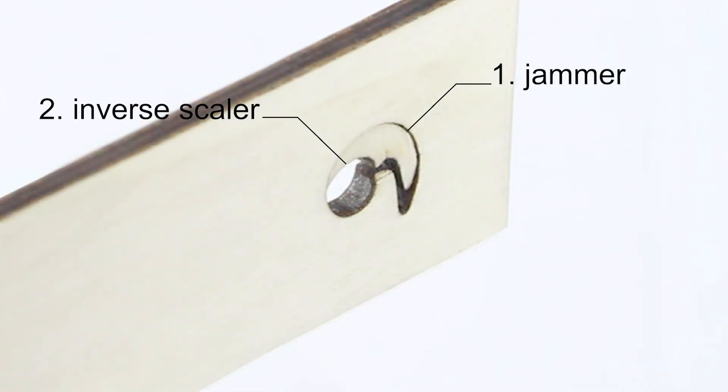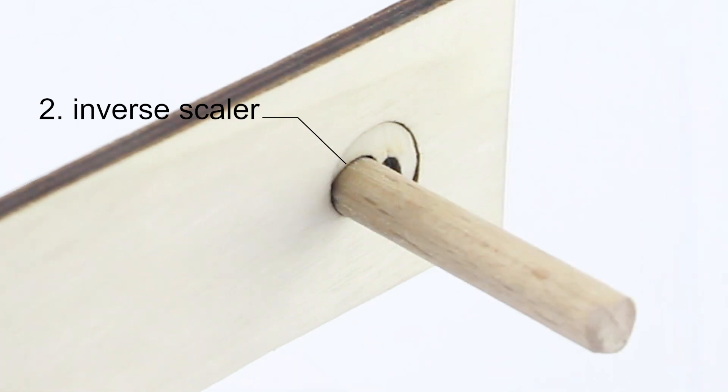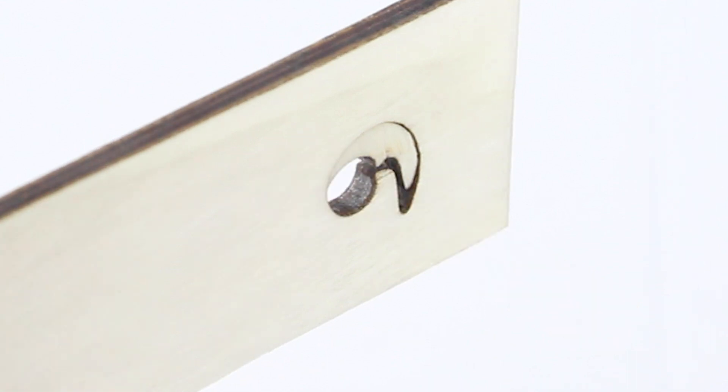So the shape of the jammer keeps the inset in place. In turn, the inverse scalar holds the axle in place, independent of the curve. This works because the shape of the inverse scalar is a flipped version of the jammer.